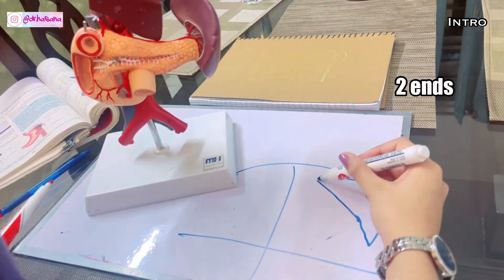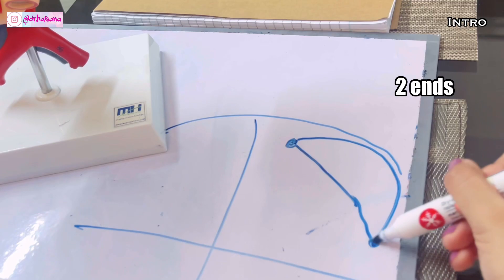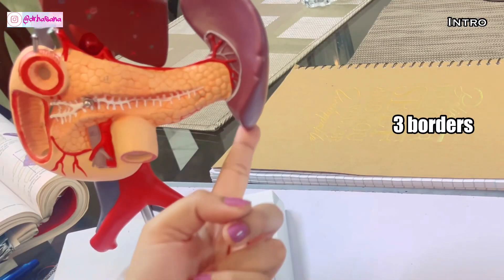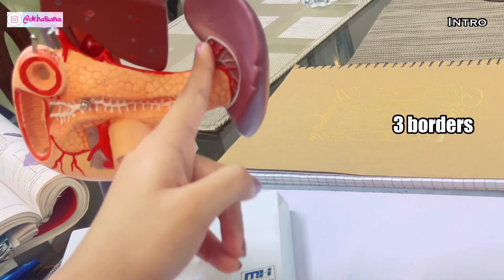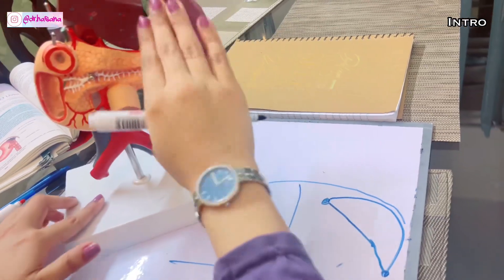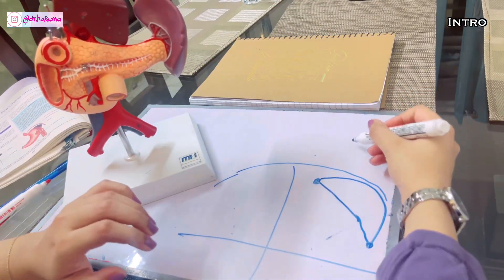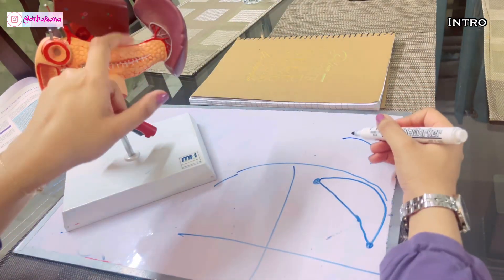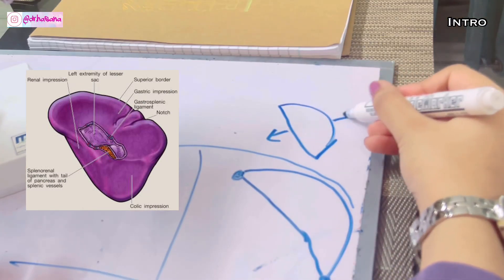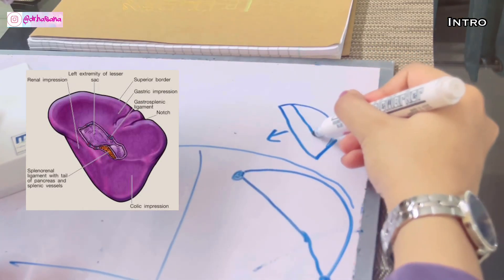The spleen has two ends, the posterior end and an anterior end, three borders: the superior border, an inferior border, and an intermediate border right at the center side. This is its left side, this is the right side.